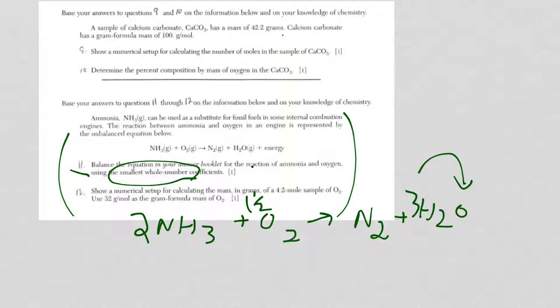Since there's a one and a half now, I'm just going to double everything through. It's actually going to be 4NH3 plus 3O2 yields 2N2 plus 6H2O.